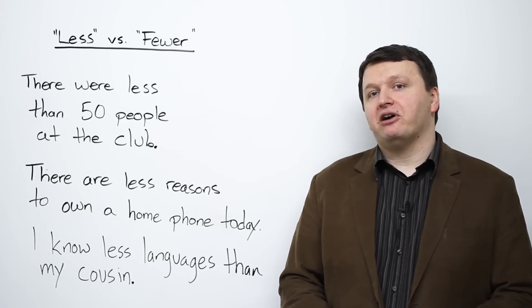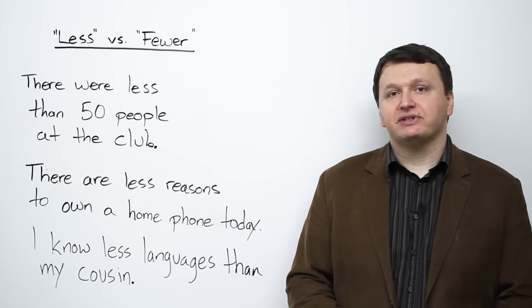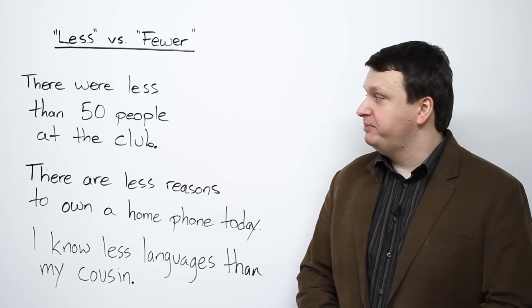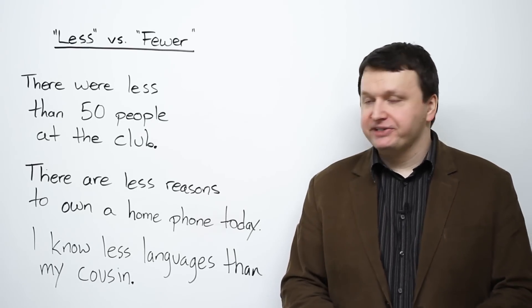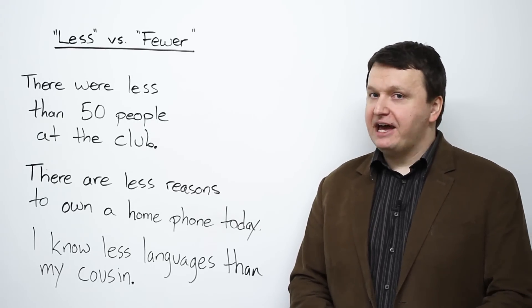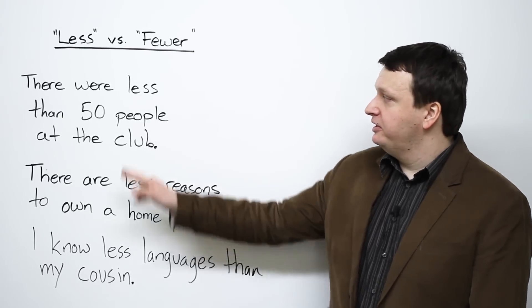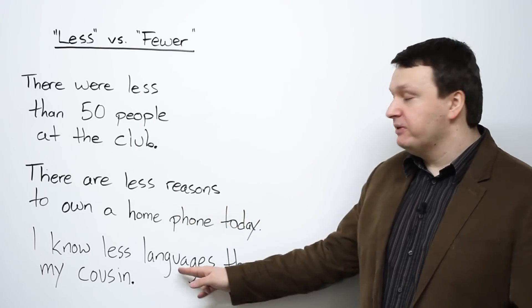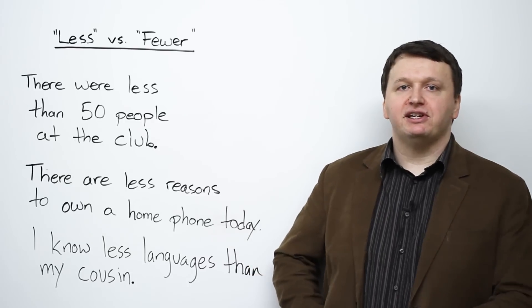Things that you can count and are in plural form should use 'fewer'. In these three examples there are three mistakes: 'There were less than 50 people at the club', 'There are less reasons to own a home phone today', 'I know less languages than my cousin.' All of these are wrong because they use 'less' with count nouns. People — you can count people. Reasons — you can count reasons. Languages — you can count languages. So with all of these, you should actually be saying 'fewer'.